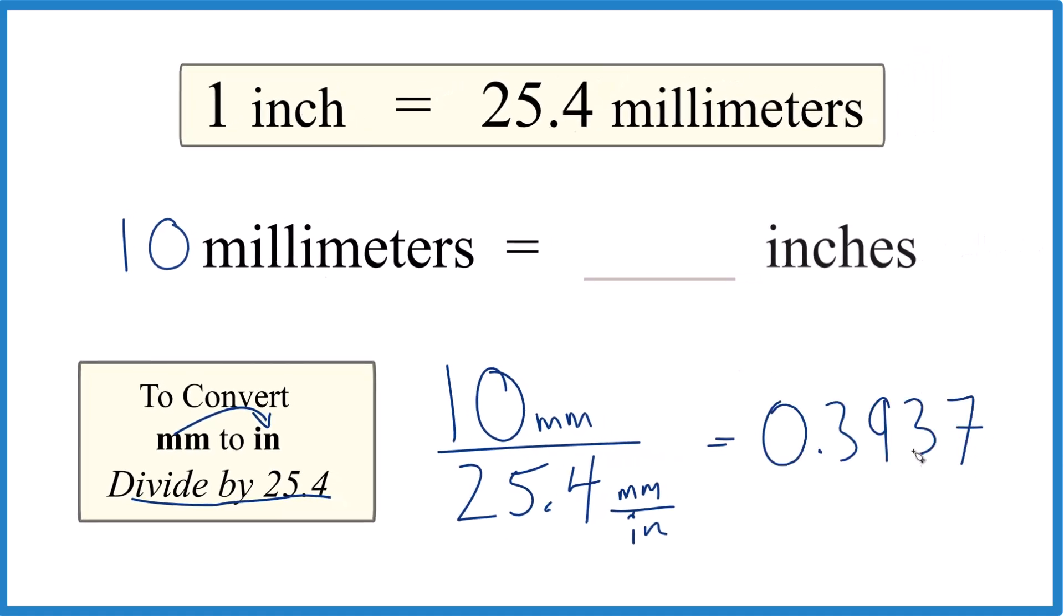And we end up with, let's round that to 0.394, and millimeters here and here, they cancel out, so we're left with inches. That's what we're looking for, and 10 millimeters is 0.394 inches.